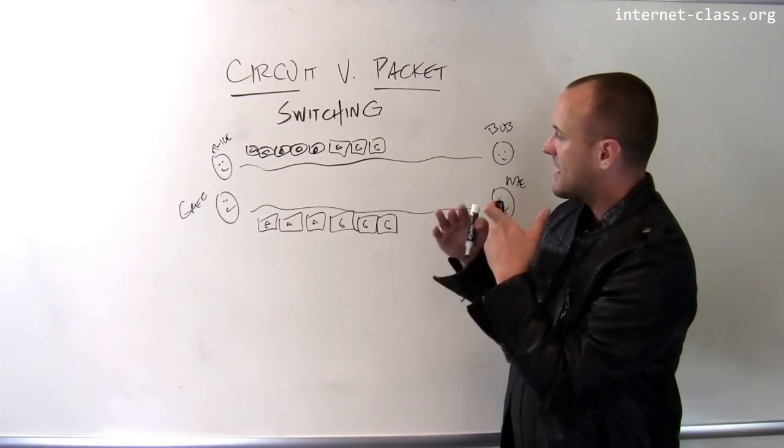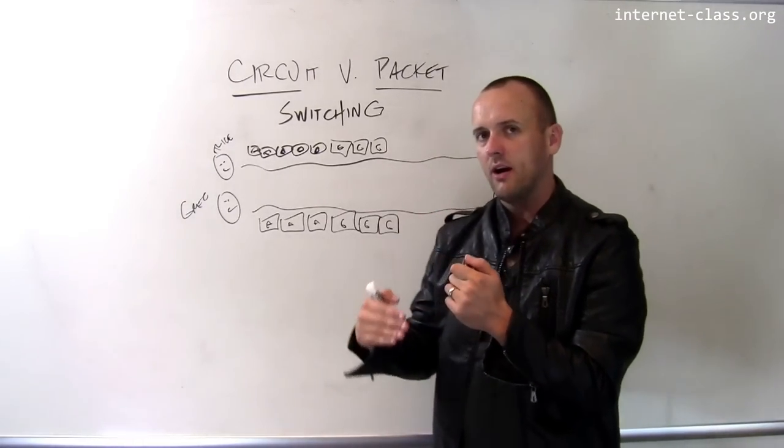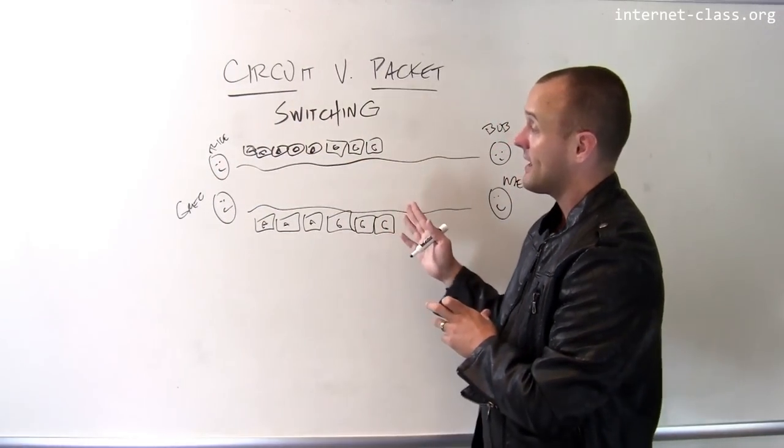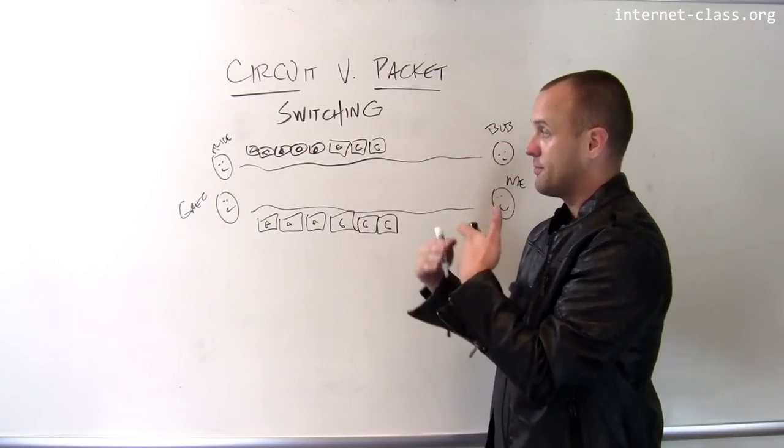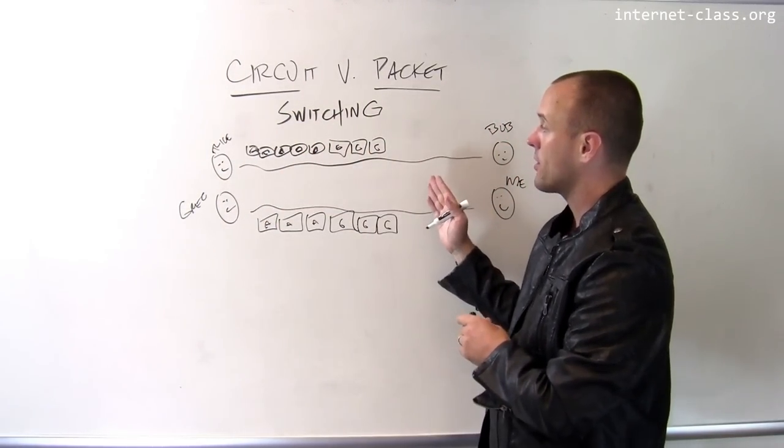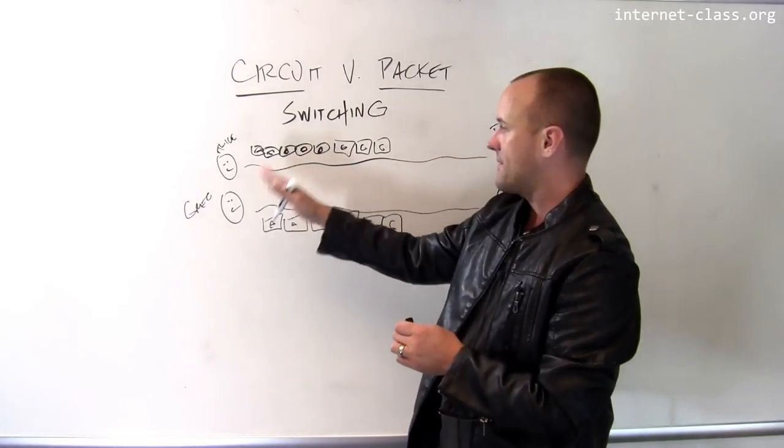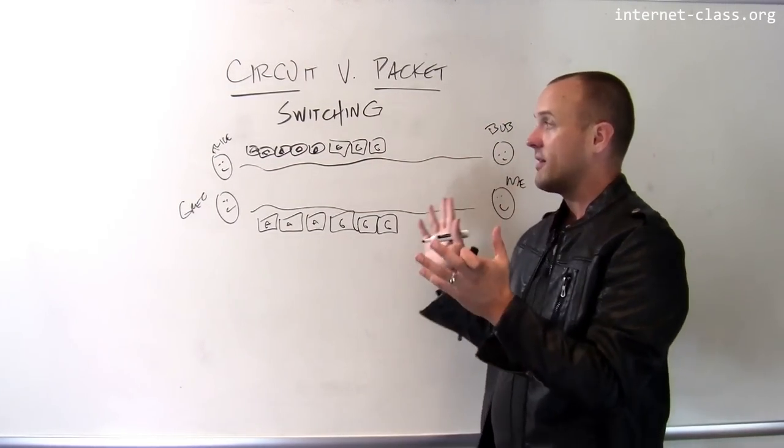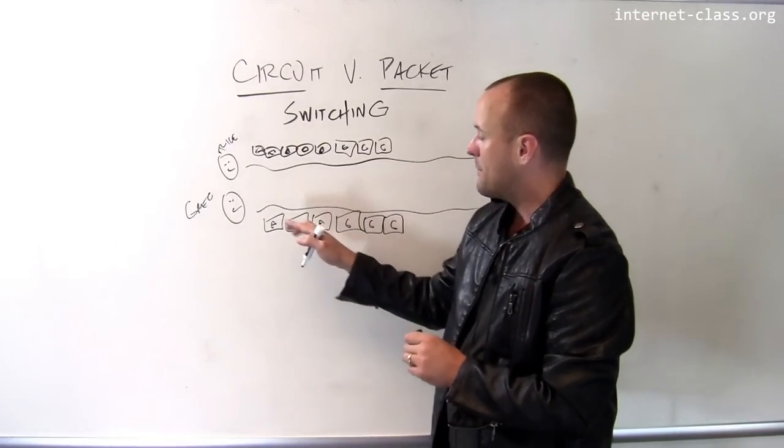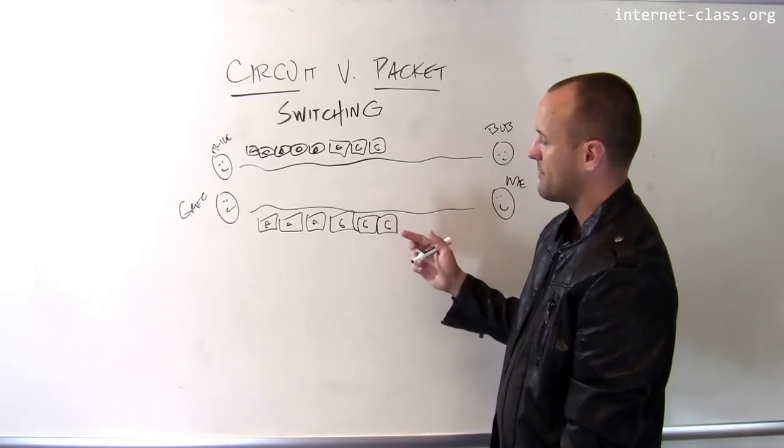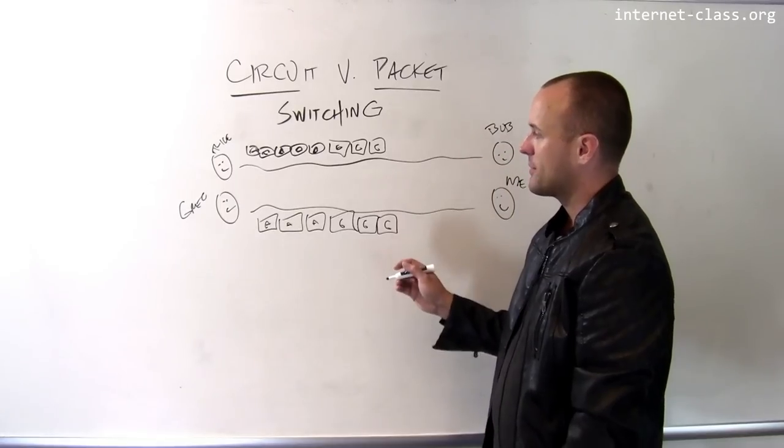And it turns out that this is actually a much more efficient way of using the network. When Alice isn't saying anything, I don't actually have to put any packets out there on the network and transmit nothing, those empty packets, over to Bob. I just leave them alone, and Bob doesn't hear anything, but that's okay because Alice isn't saying anything.